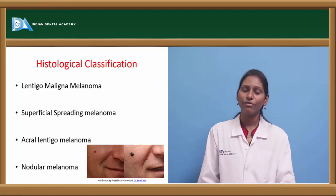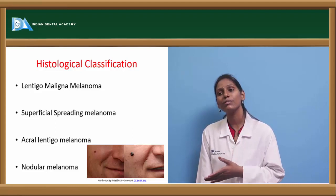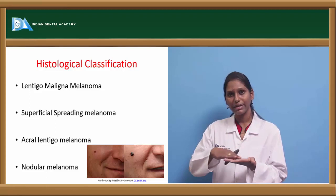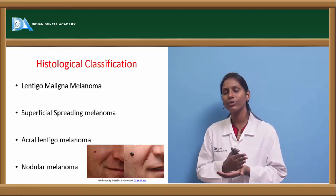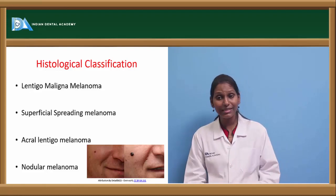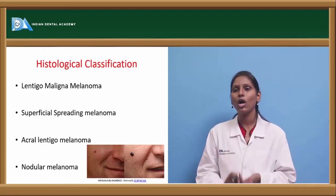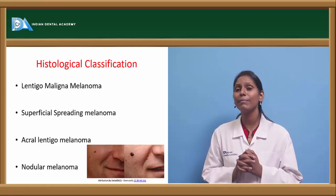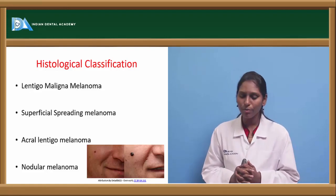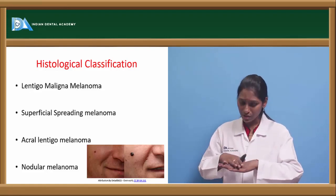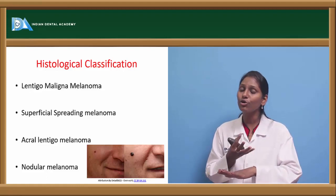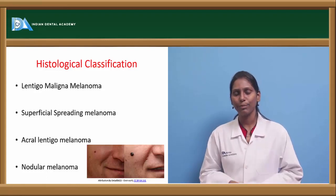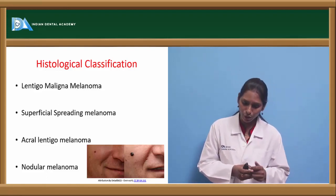Superficial spreading melanoma is one of the commonest types, seen on both sun-exposed and non-exposed areas, including thighs. Hyperplastic epidermis is seen and Pagetoid type of cells predominate. It can also show outward bulging or warty growth as it spreads horizontally.